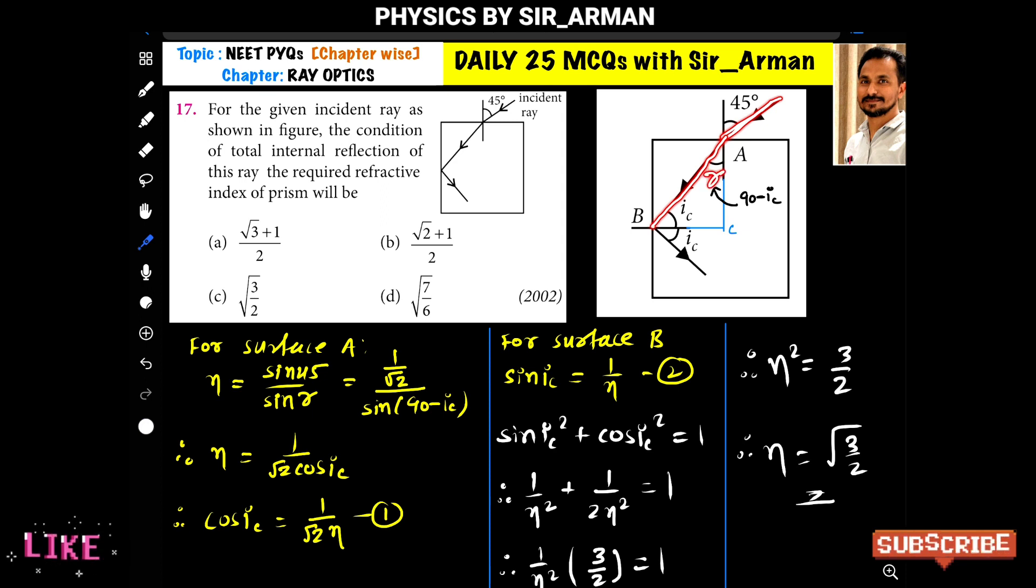Now let us assume that the ray makes angle here ic with the normal to this surface as it is passing from denser to rarer and it satisfies the condition of total internal reflection, it will reflect back. Now if we see this surface A and apply Snell's law at surface A.